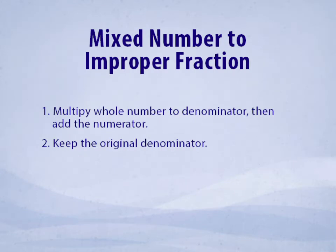To convert a mixed number to an improper fraction, we multiply the whole number by the denominator, and then we add the numerator. We're going to always keep the original denominator.